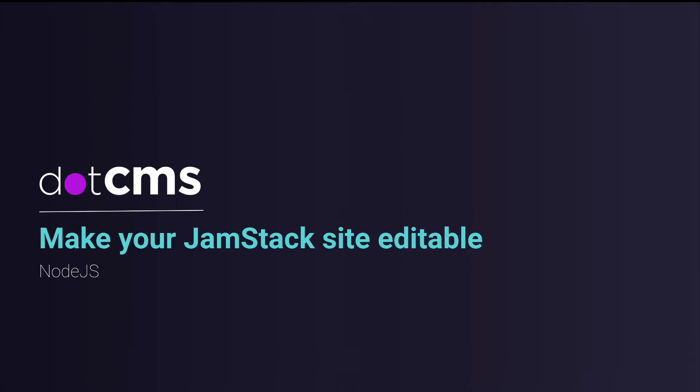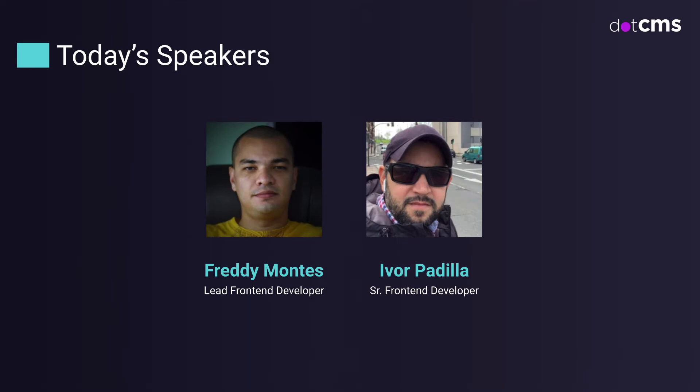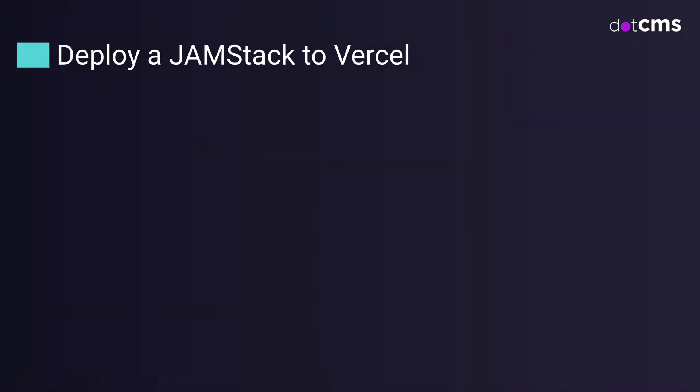Hello, everyone, and thank you for joining us today on this second part of the Jamstack webinar. In this part, we're going to explain how to make your Jamstack site editable with .CMS. Ivor is going to explain how to deploy our Jamstack website to Vercel. To deploy a Jamstack to Vercel, we need three environment variables in our project. Environment variables are just variables that are deeply tied to the Node.js process, and they are needed to run this application in different environments.